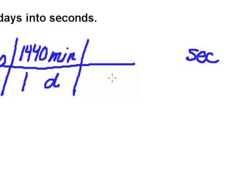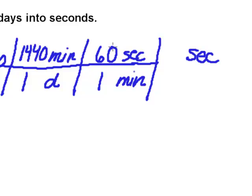Now minutes is on the top, so minutes is going to go underneath, and seconds is going to go on the top. Again, minutes are bigger than seconds, so the minutes gets a 1, and 60 seconds in every minute.